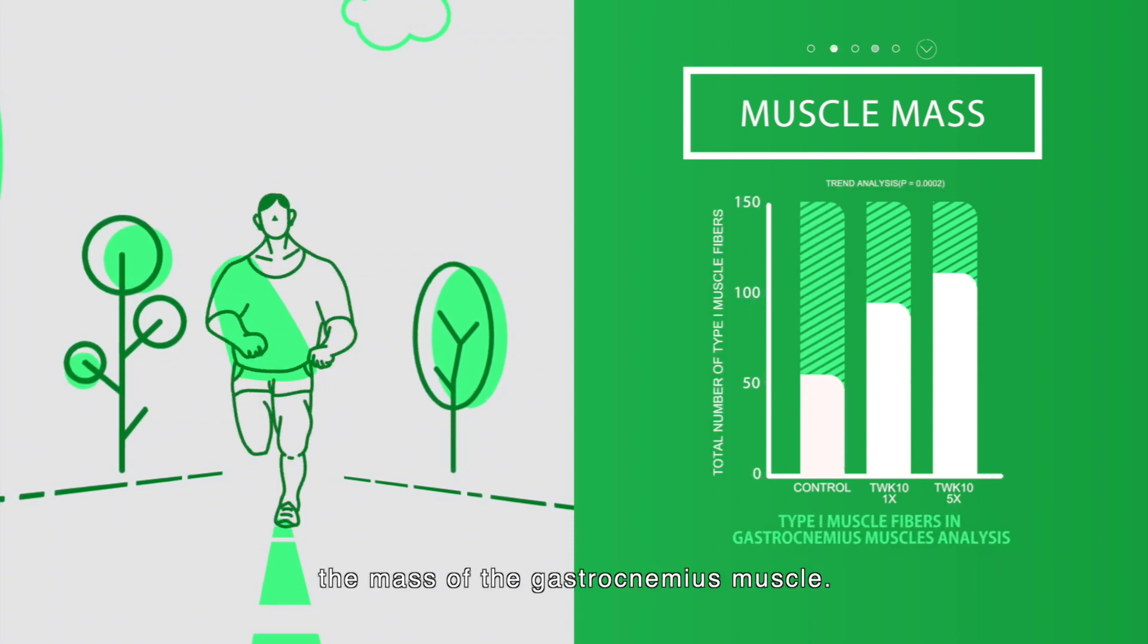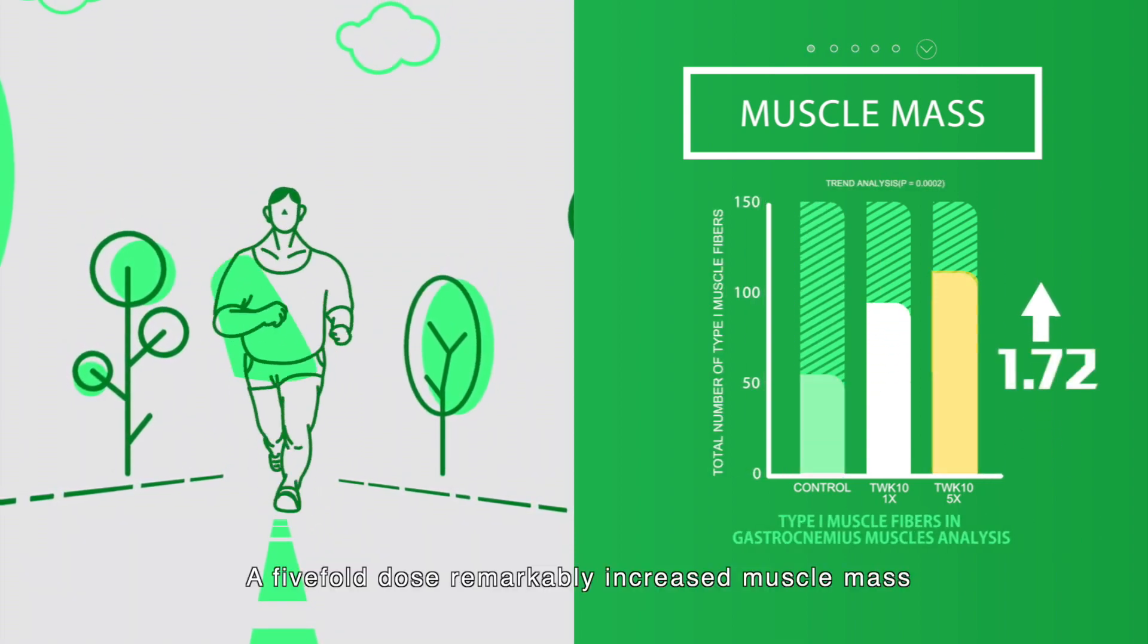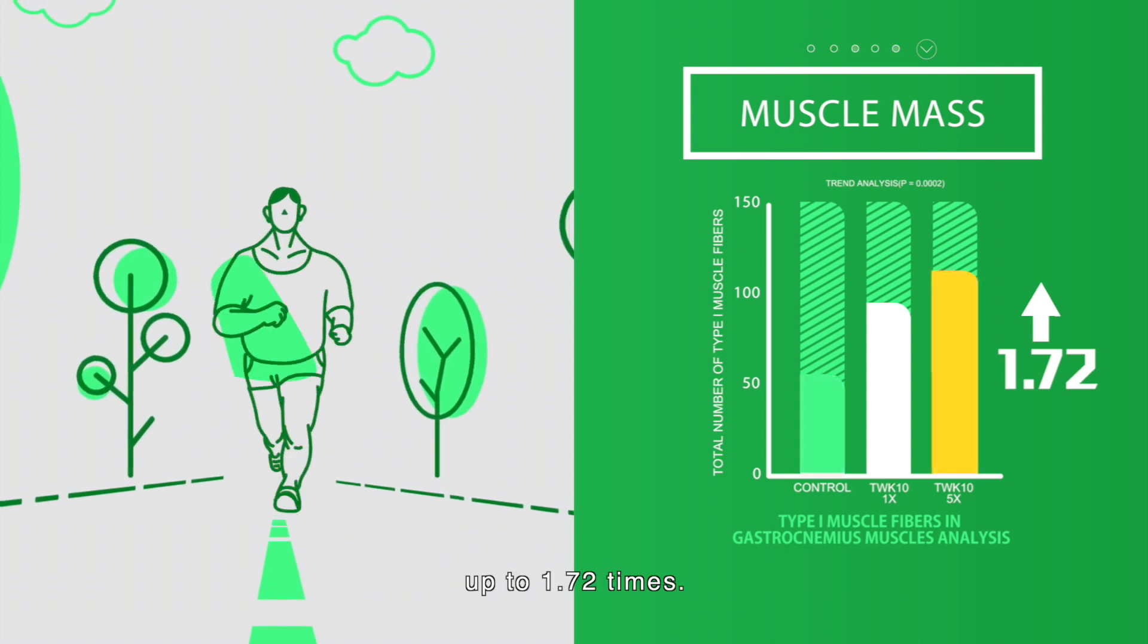TWK10 considerably increased the mass of the gastrocnemius muscle. A five-fold dose remarkably increased muscle mass up to 1.72 times.